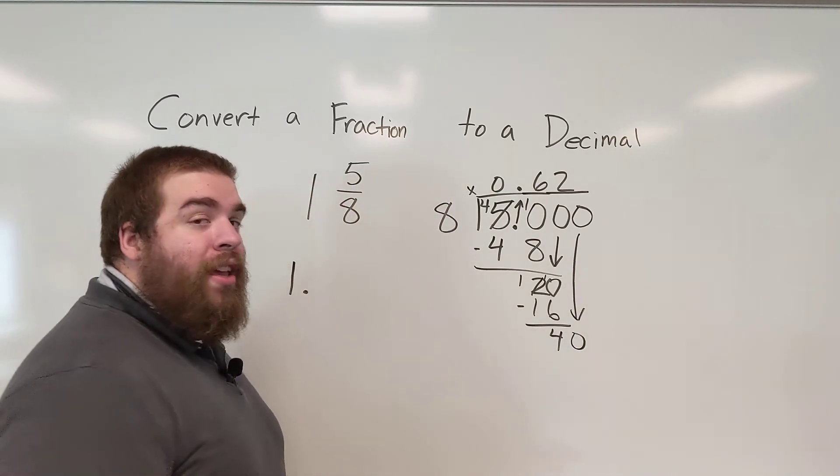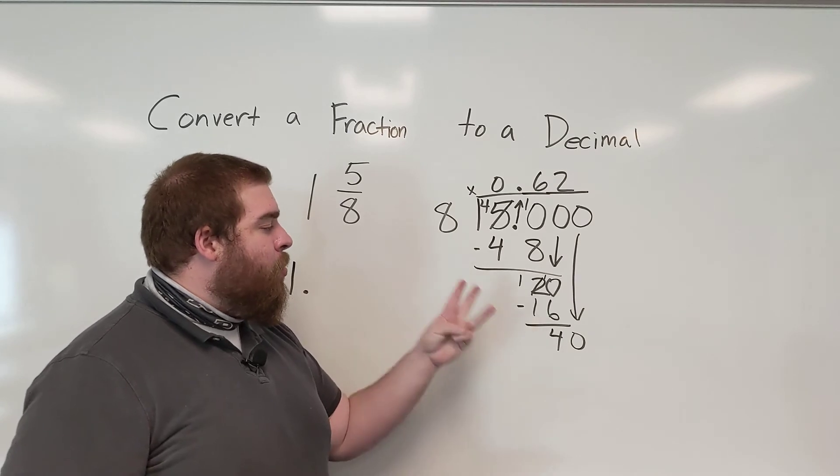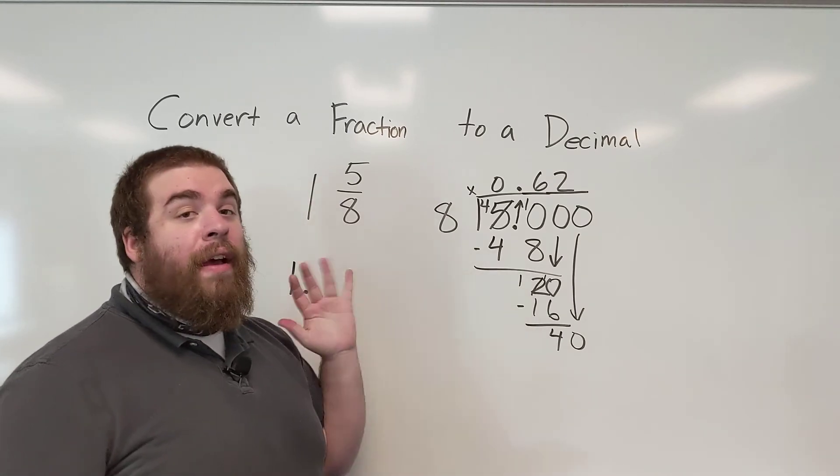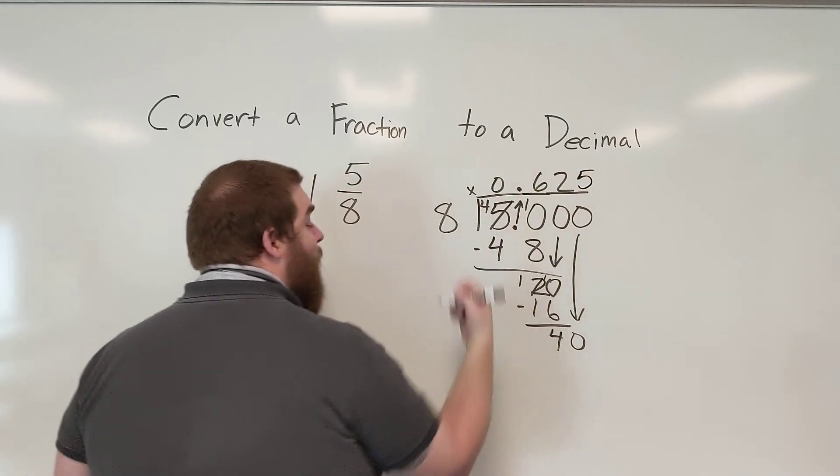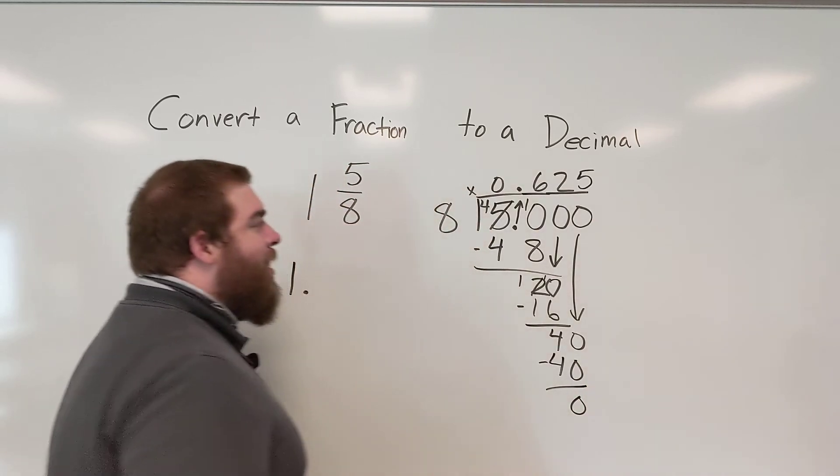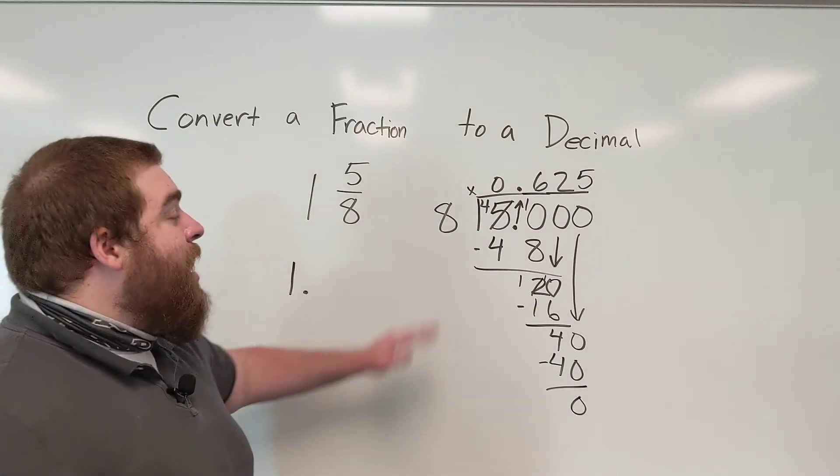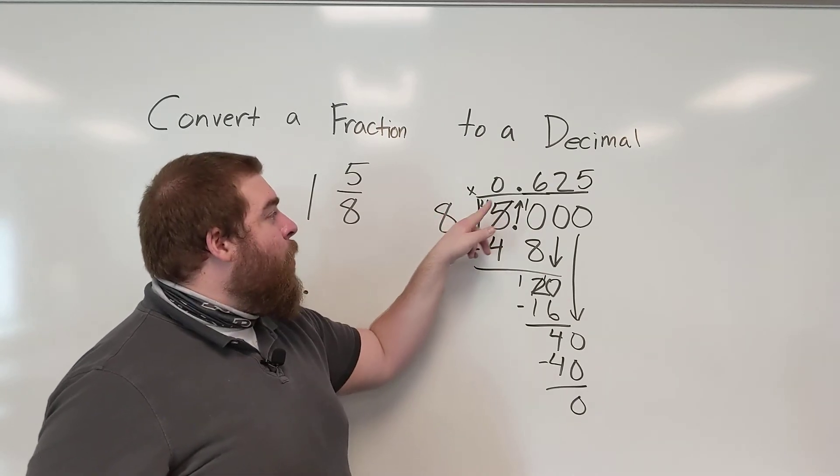Now I have 40. 8 goes into 40 how many times? 8, 16, 24, 32, 40, 5 times. 5 times 8 is 40. And then I subtract. 40 minus 40 is 0. So our decimal when we're dividing 5 divided by 8 is 0.625 thousandths.